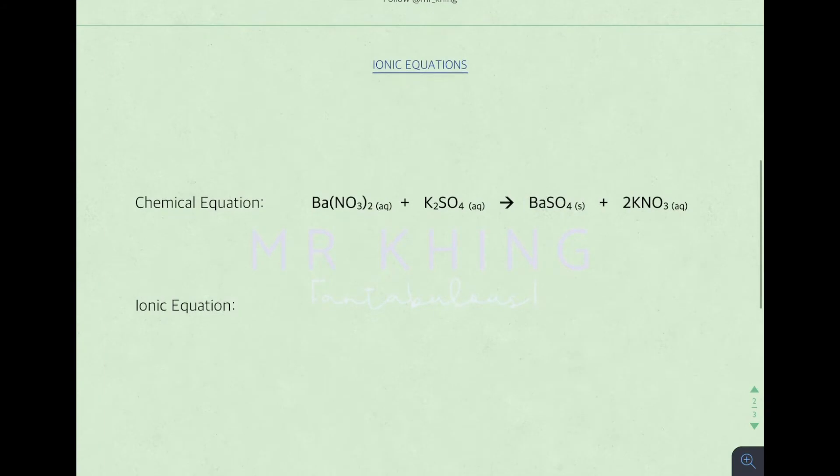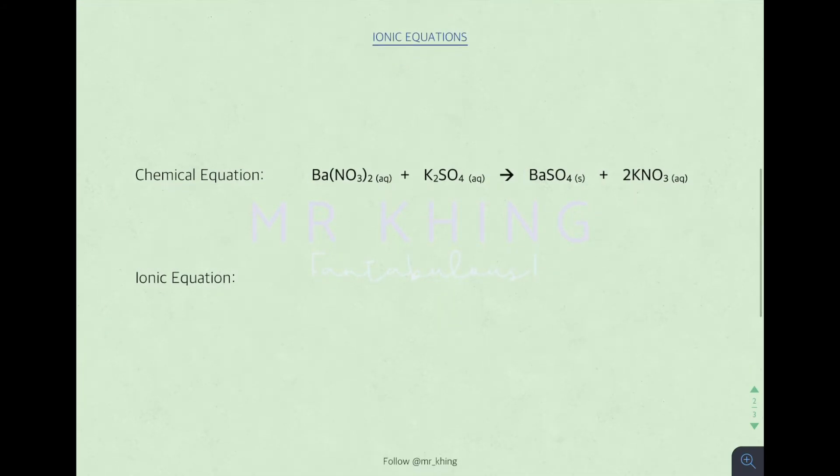Let's go to another example. Same thing, compare the state symbol. Barium initially aqueous, barium after solid. Changes state symbol, so therefore we include barium. Nitrate aqueous, nitrate aqueous. Remain the same. Spectator ion, so we remove.